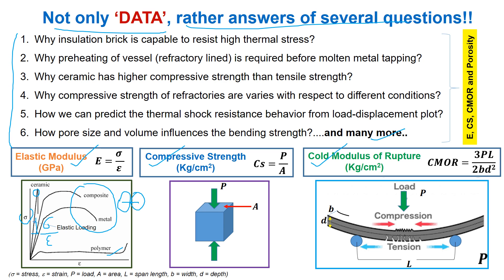Ceramic has higher compressive strength than tensile strength, and it can be obtained from the ratio of load by area. However, bending strength combines both compression and tension, where the tensile zone is much more prone to fracture. Refractory testing is usually done through the three-point bending method, not the four-point bending method. This method, also known as the flexural test, depends on dimension and load rate, and some standard protocol should be maintained.